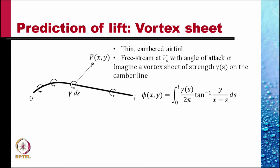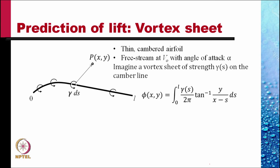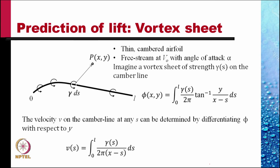Because of this vortex sheet of strength that varies like gamma s, the velocity u at any location s can be determined by differentiating phi with respect to x. There is a discontinuity at y equals zero. And we get u, the horizontal velocity, slightly above the camber line as minus gamma by 2 and slightly below as gamma by 2. This gives us the velocity on the camber line.